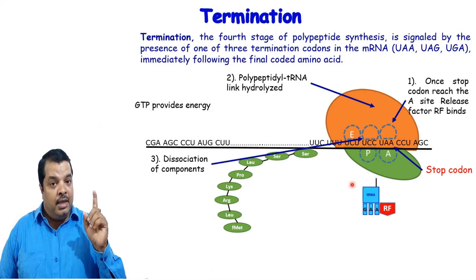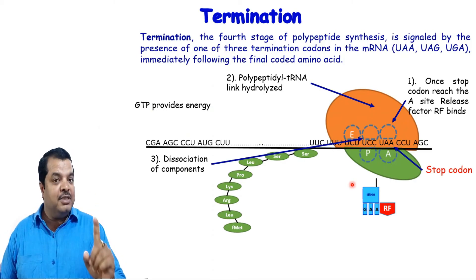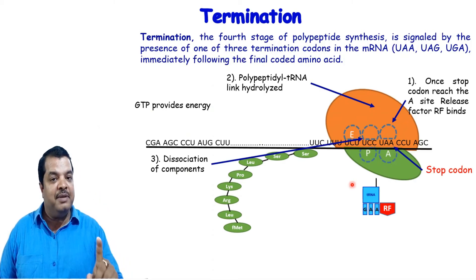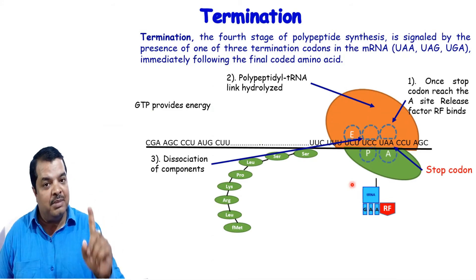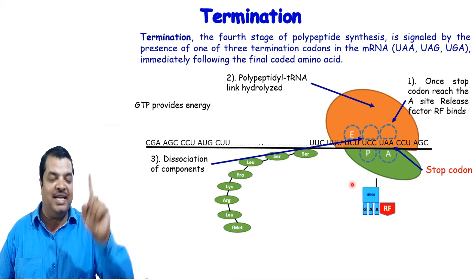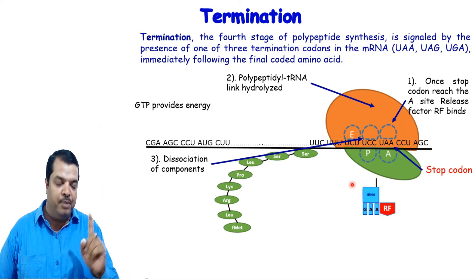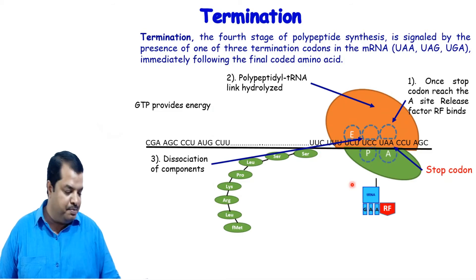GTP is used in initiation, elongation, and termination. ATP is used in activation. This is important — remember it.